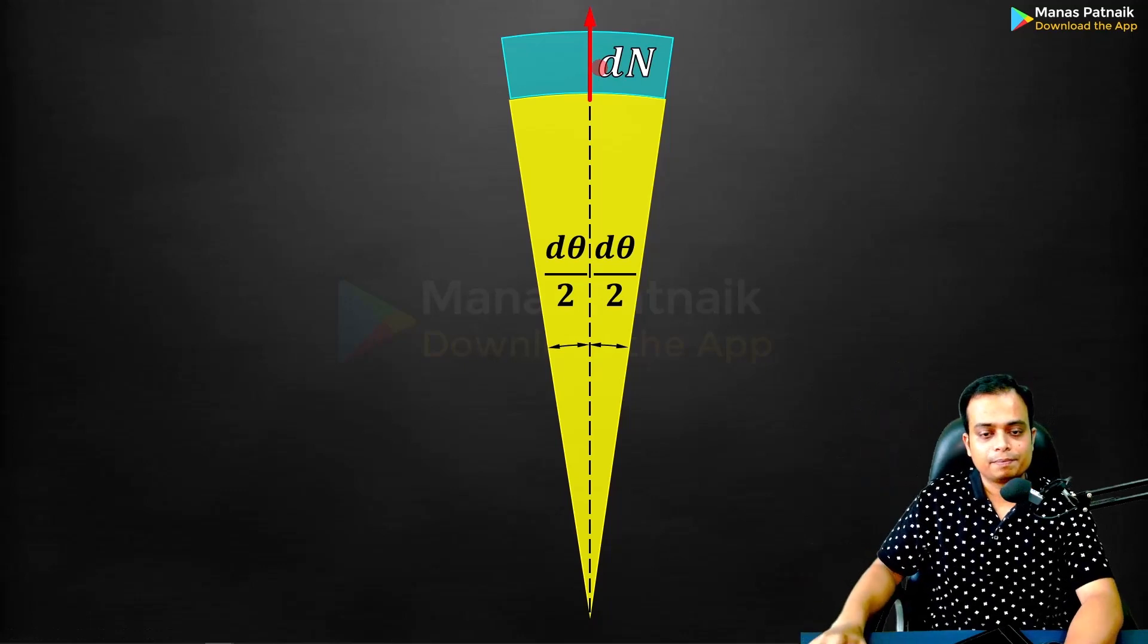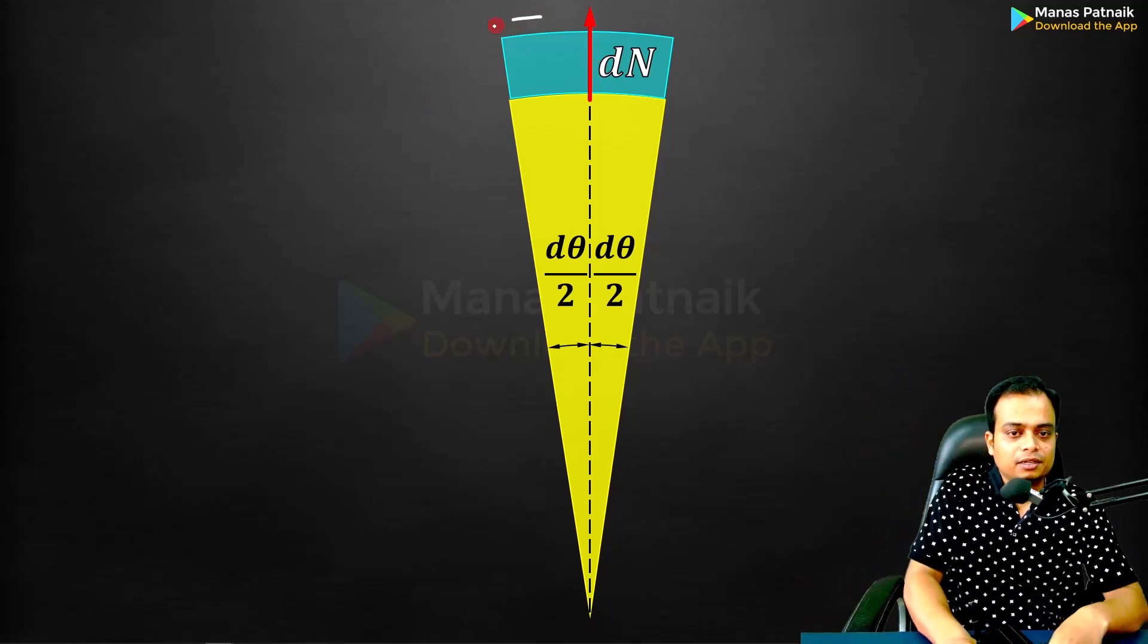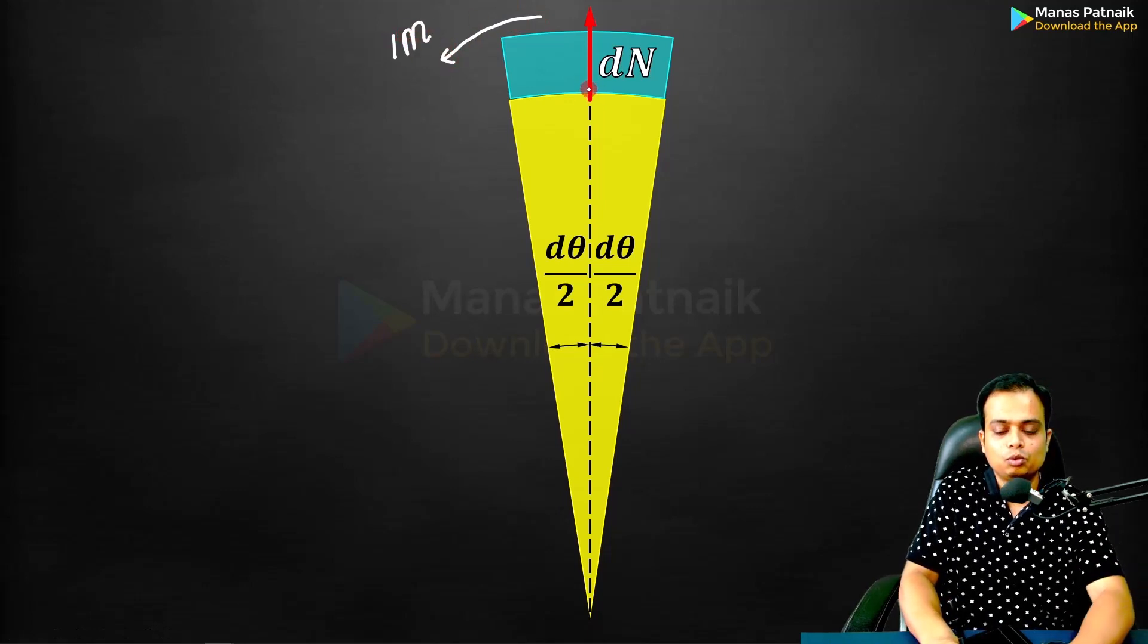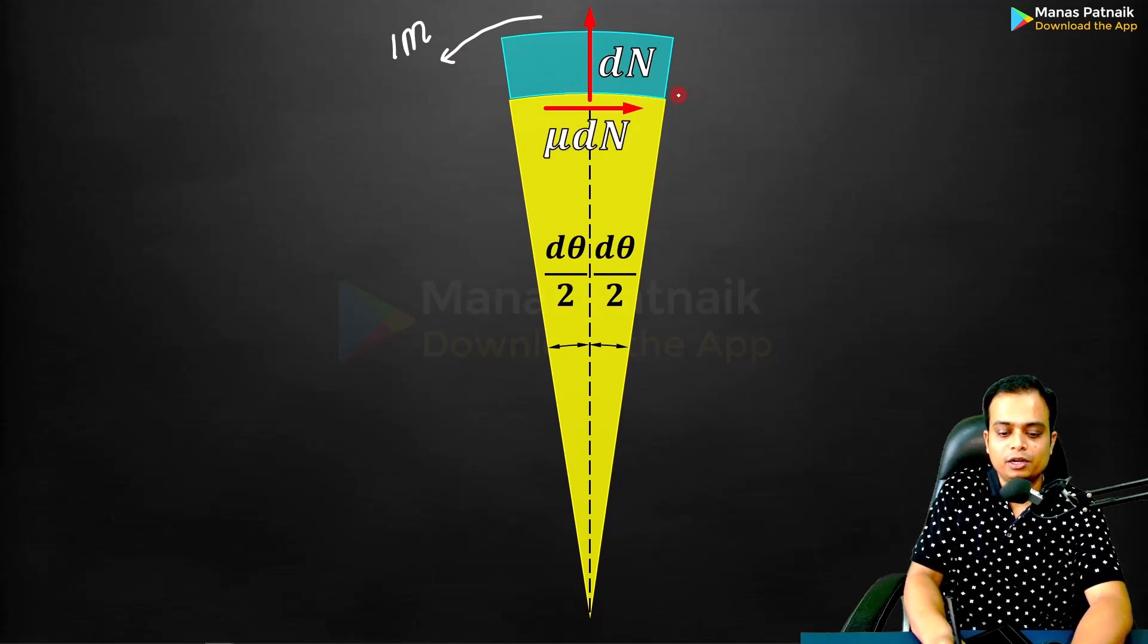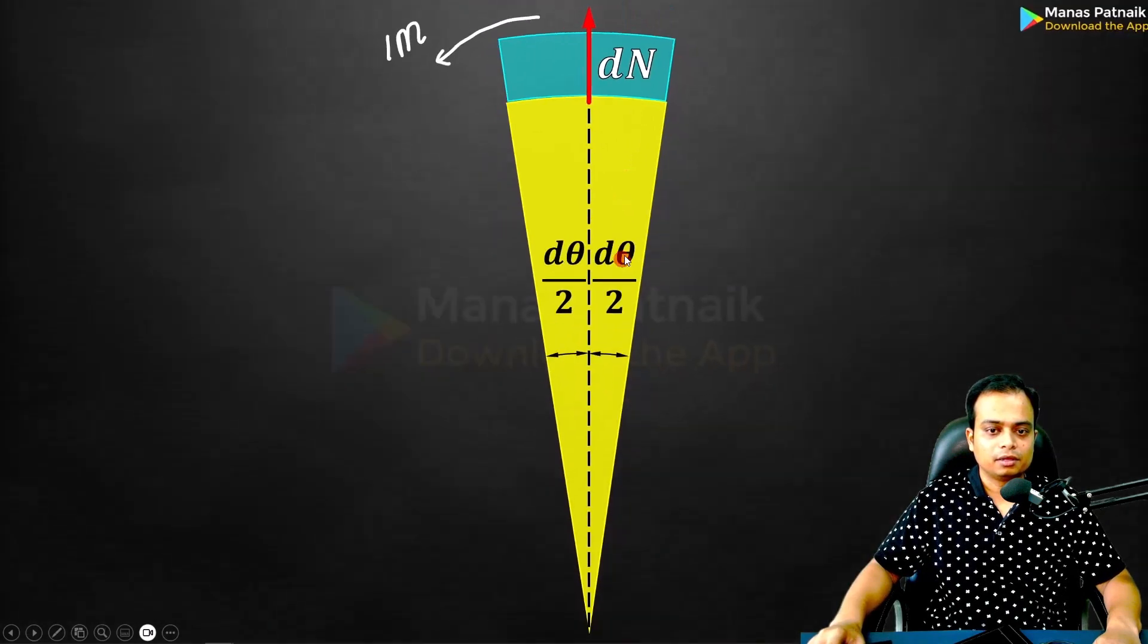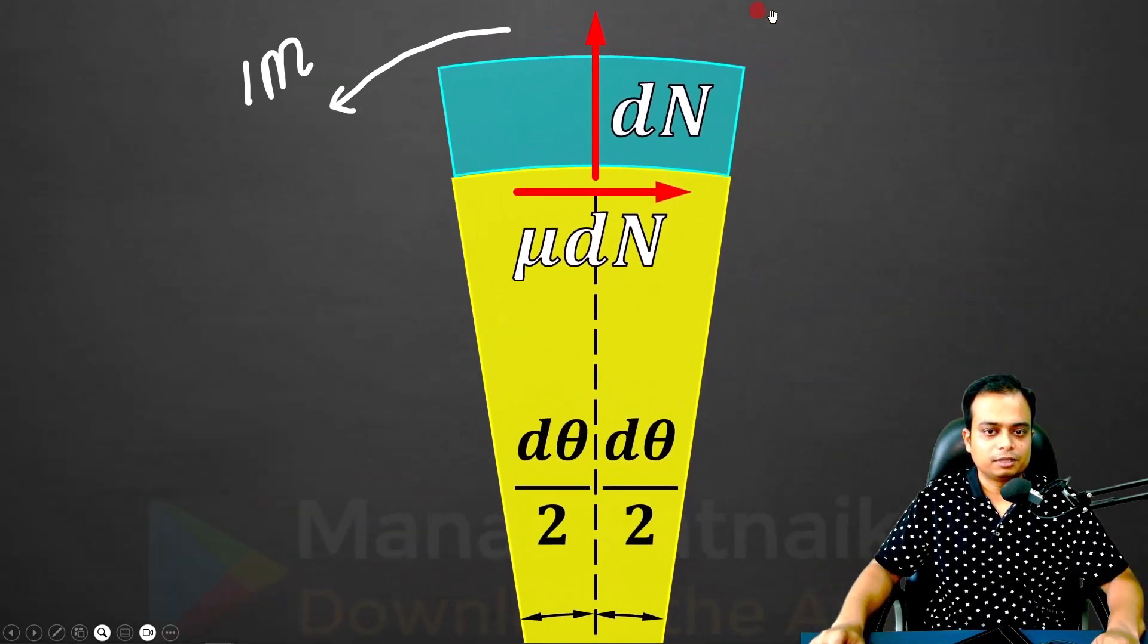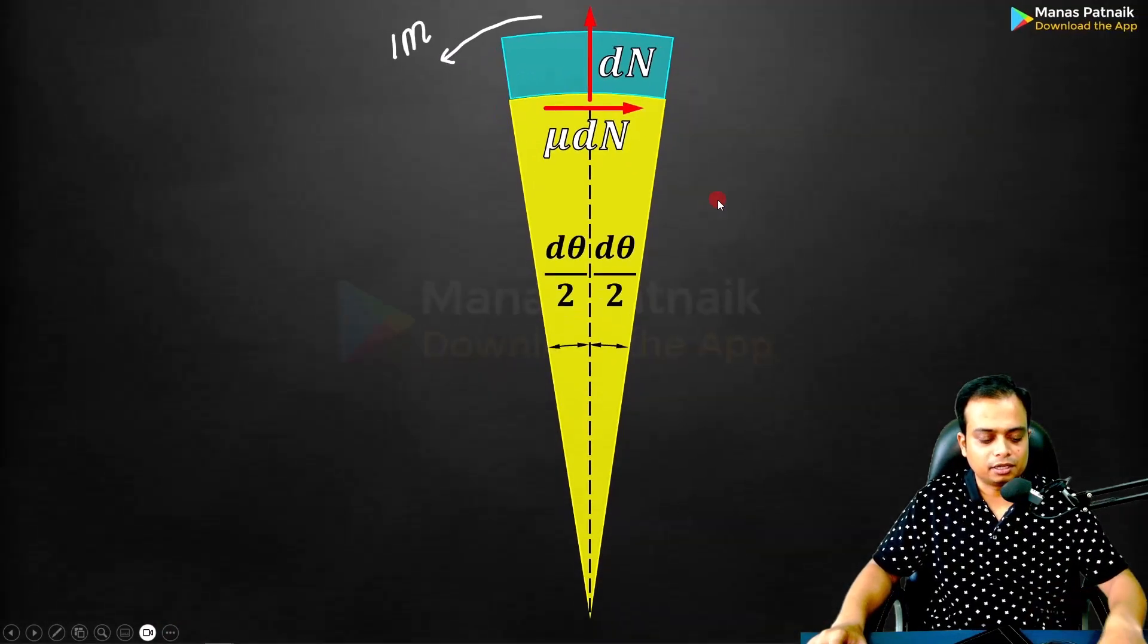We know that the motion impends along this direction—impending motion to the left. So friction μN, or μdN, will be to the right. Let me show this to you once again. Here we go. This is impending motion to the left, friction to the right: μdN.